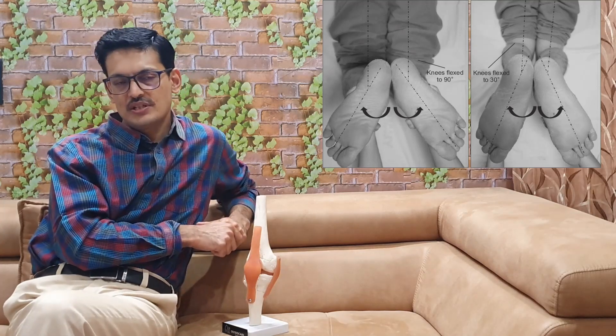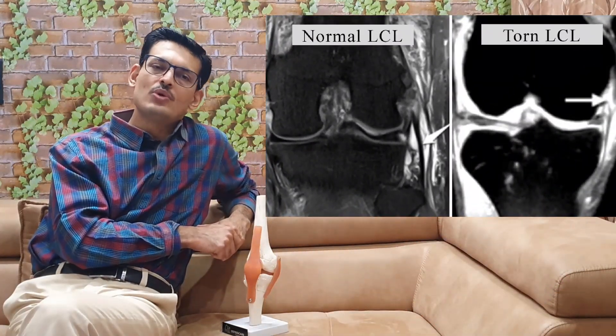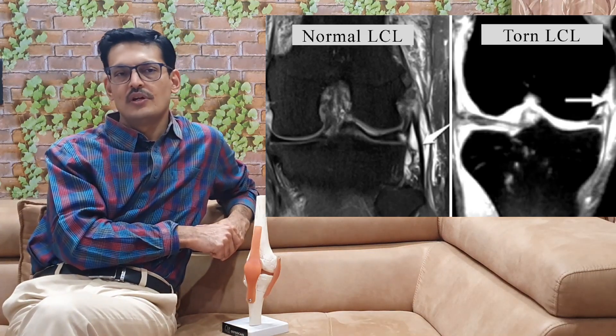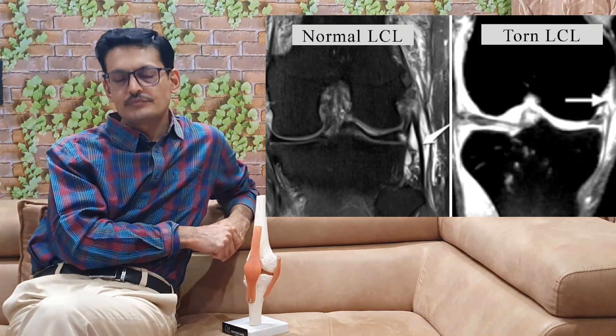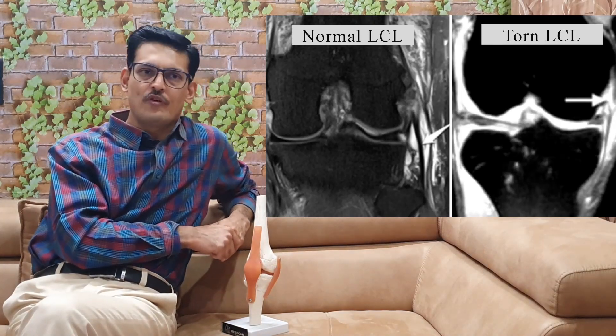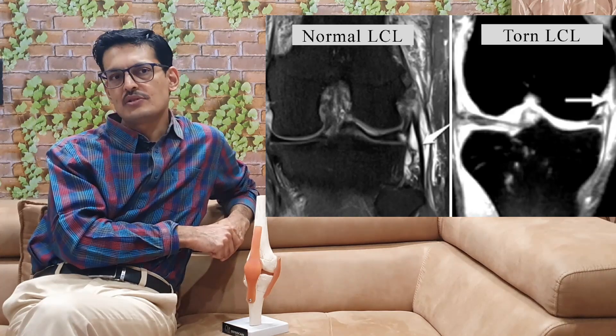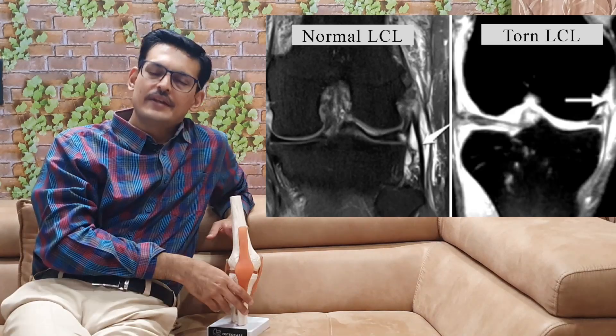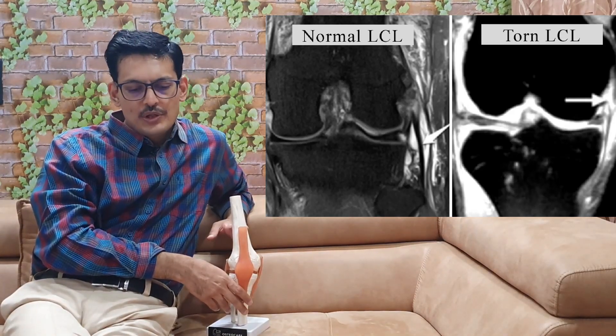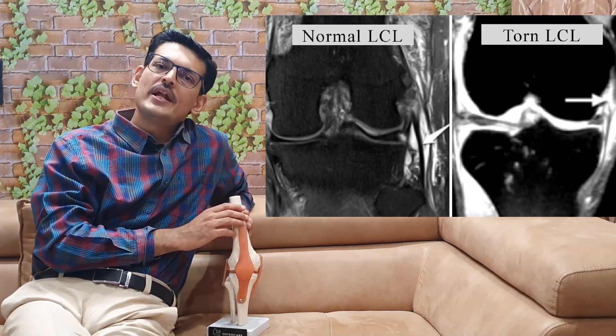The grade of injury can be assessed with either a stress X-ray or an MRI scan; MRI is preferred for both acute and chronic LCL injuries. There are 3 grades: Grade 1 has 0 to 5 mm of opening with subcutaneous fluid surrounding the ligament; Grade 2 has 5 to 10 mm of opening and represents partial tears; Grade 3 has more than 10 mm of opening and represents complete tears.